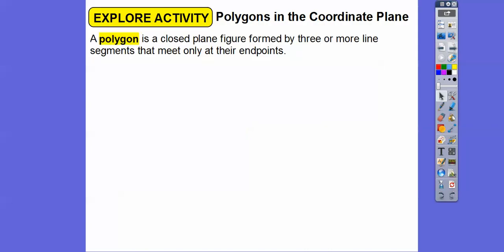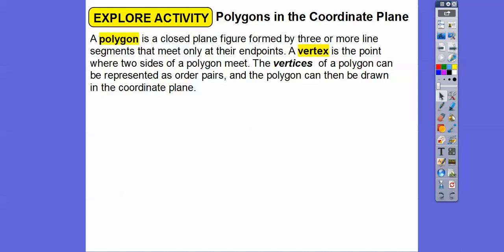So polygons in the coordinate plane. A polygon is a closed plane figure formed by three or more line segments that meet at their end points. And so a vertex is a point where the two sides meet. So we'll talk about all of these. And the vertices of a polygon can be represented as ordered pairs. And the polygon can then be drawn in a coordinate plane.